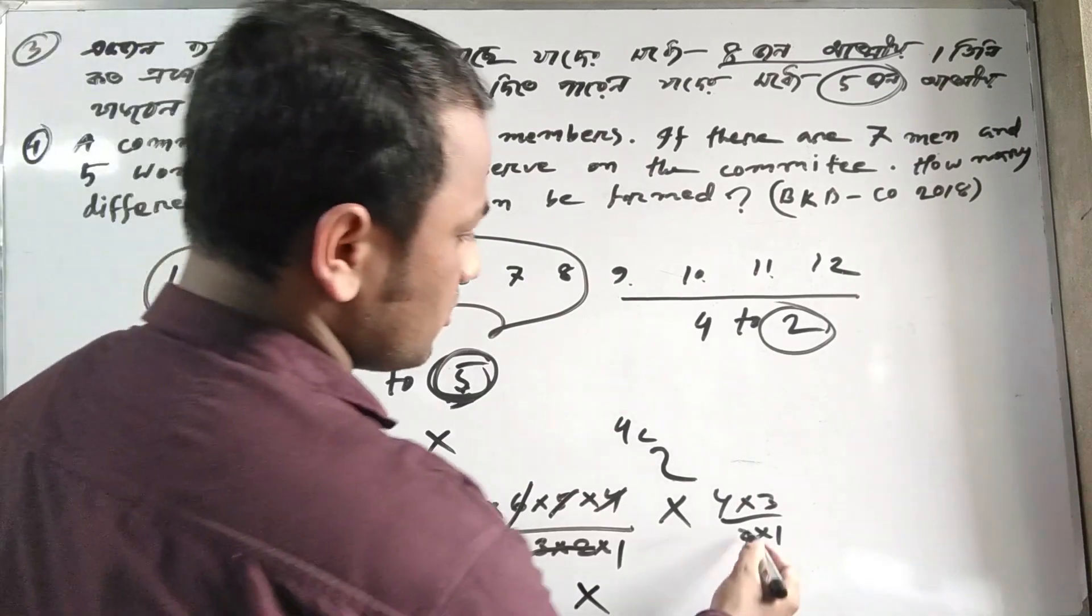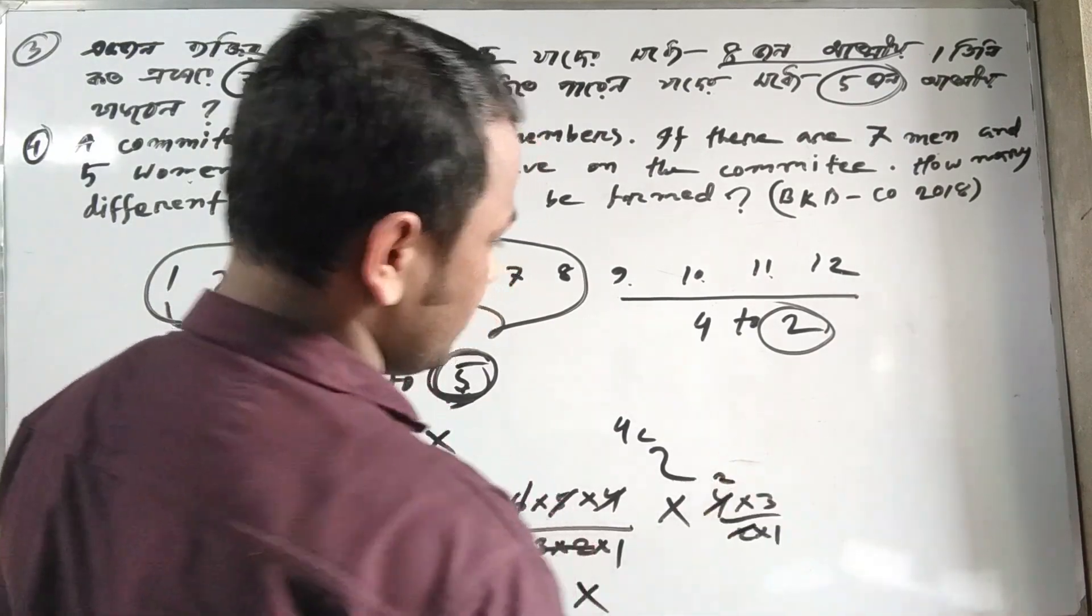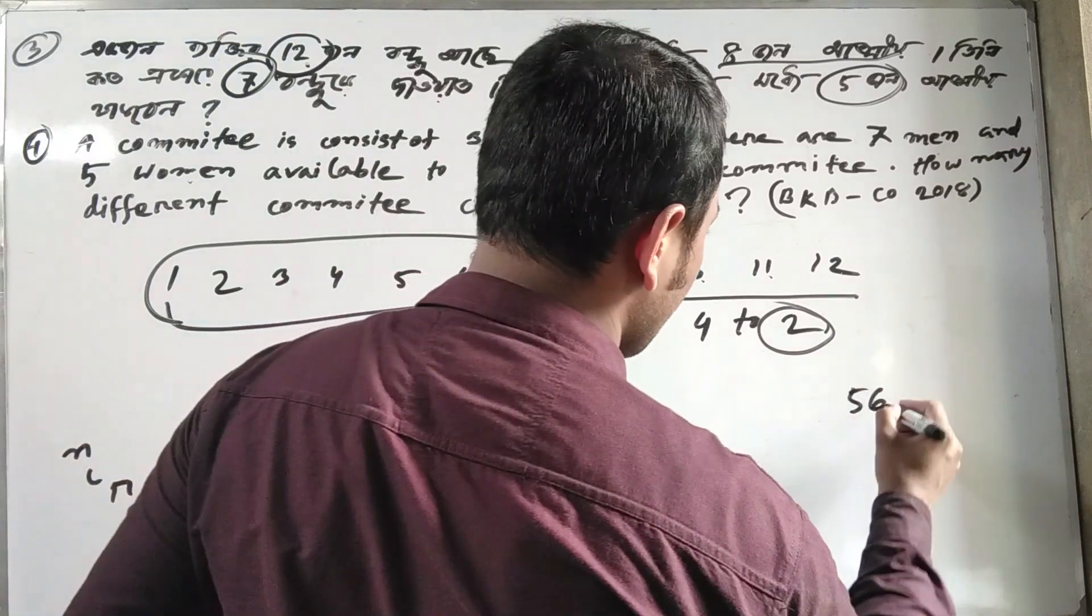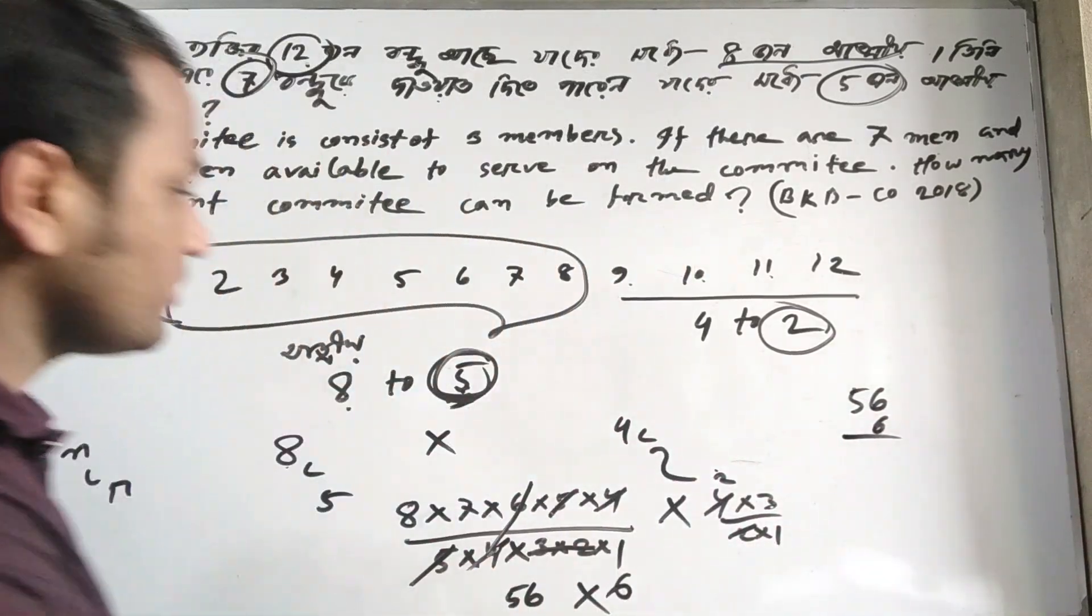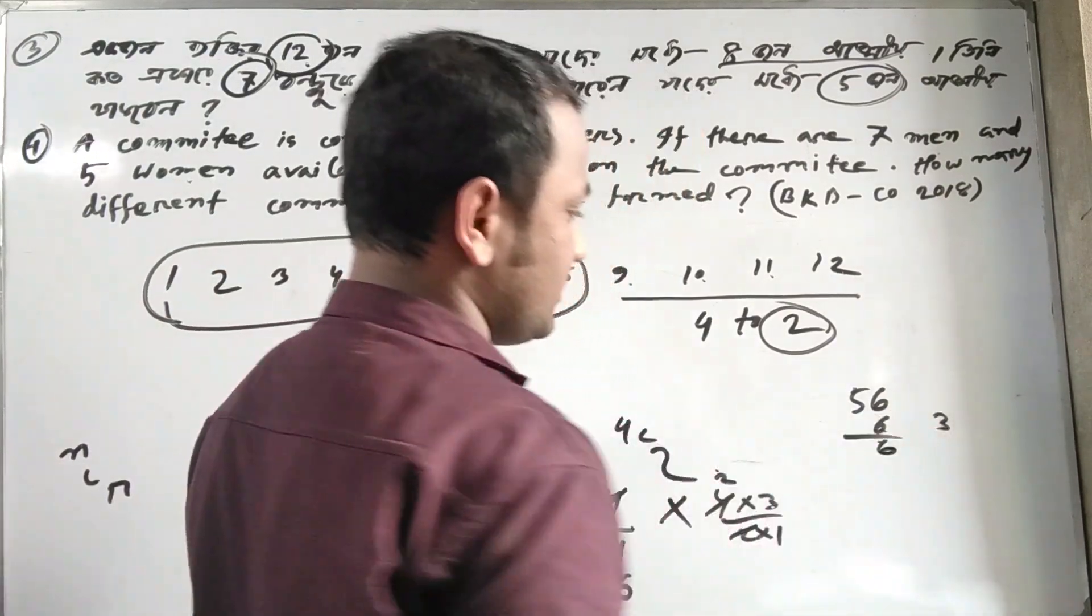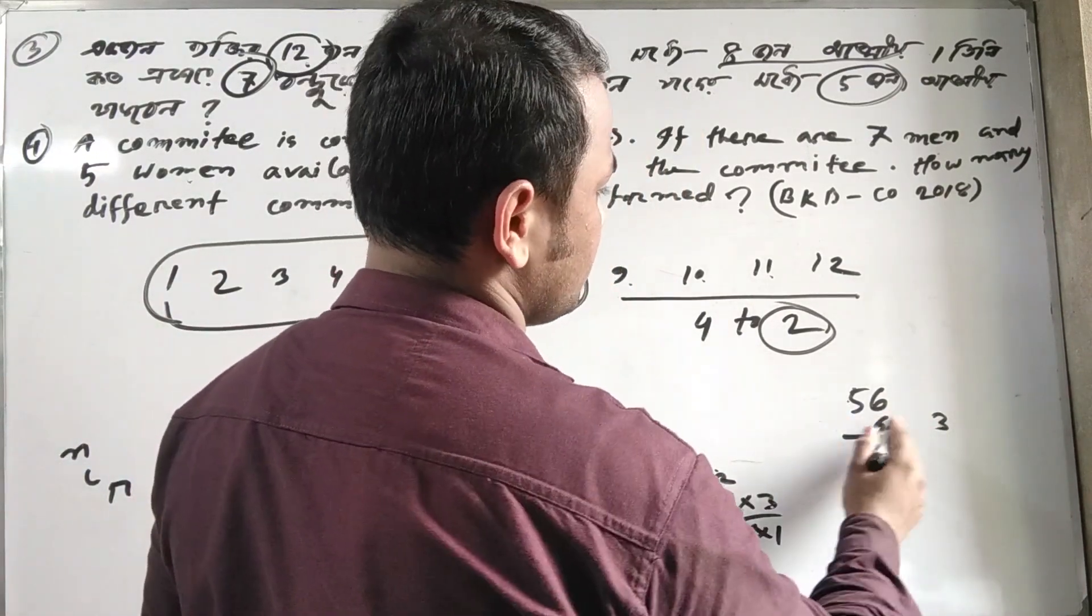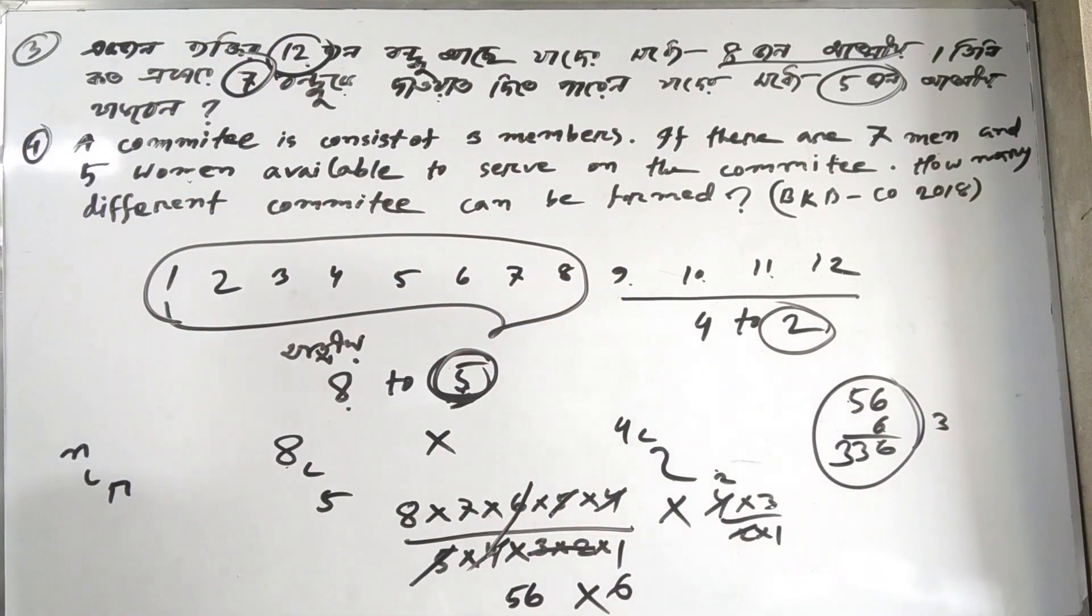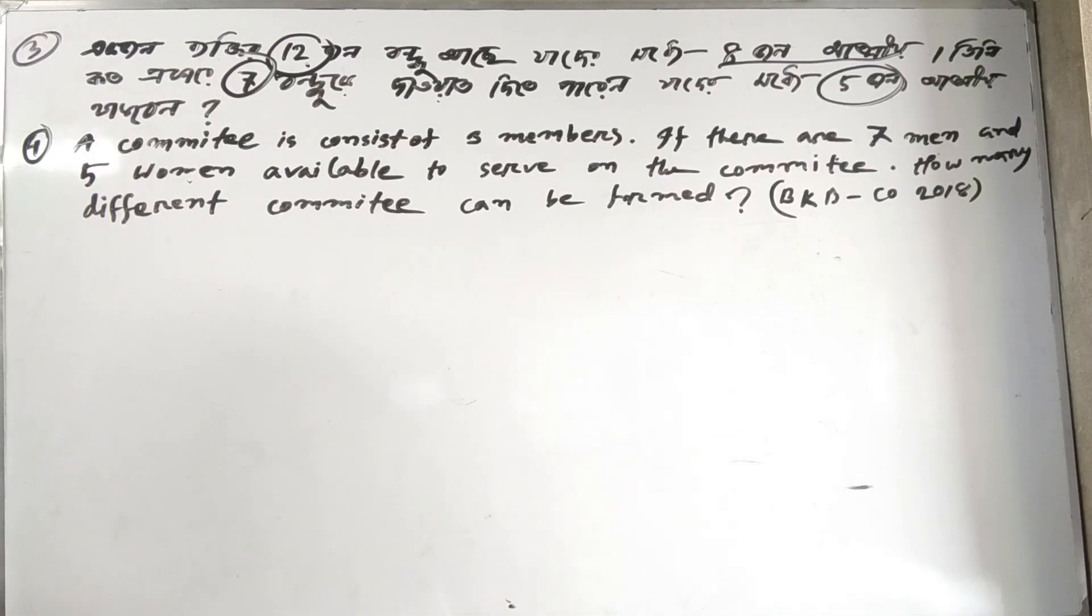Looking at concrete numbers: if you need to calculate 300 or 320 combinations, work through the formula step by step. Three hundred combinations means applying the appropriate combination formula to get that specific result.